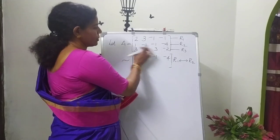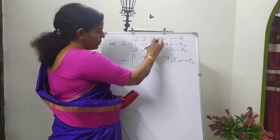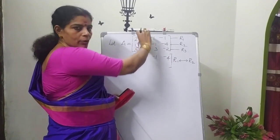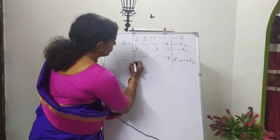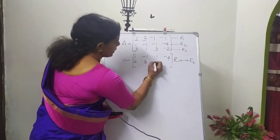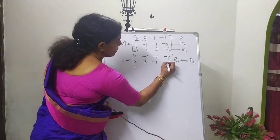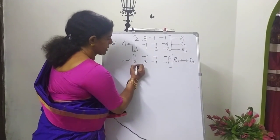We have to change R2. This row is R1. So the row is placed as 2, 3, minus 1, minus 1. The third row has no change.